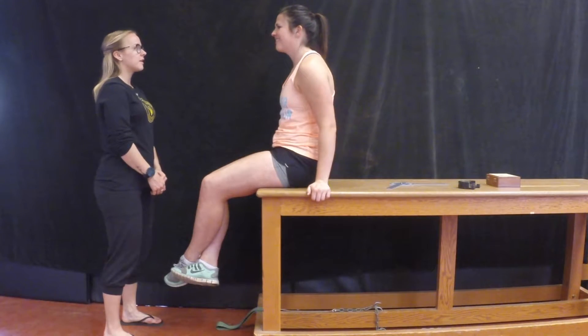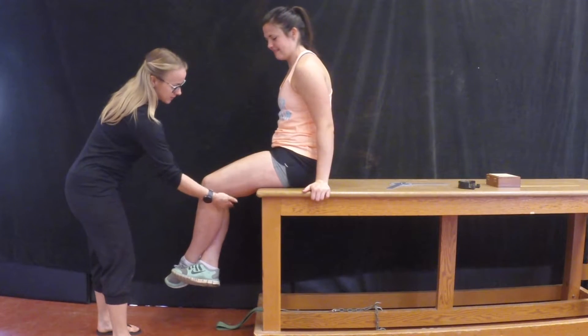To do the isometric knee extension test, first have your client sit on a table with their knees tight against the edge.